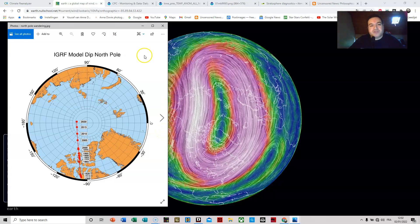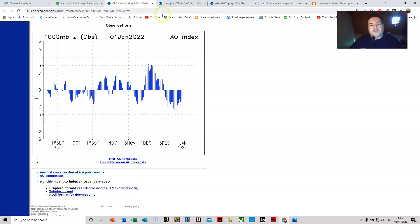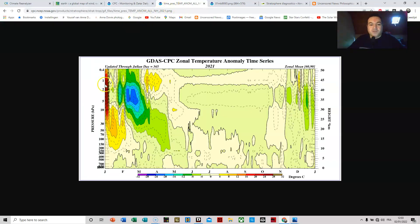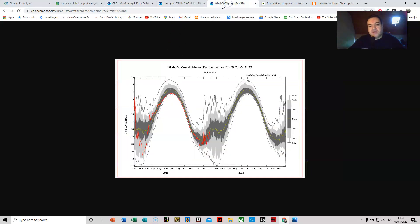So we do have a negative Arctic Oscillation at the moment. I'm not sure whether this will last or become positive again. You will see in the coming days. Luckily we don't have a sudden stratospheric warming like last year. This would have been catastrophic in a negative Arctic Oscillation because then it would intensify these incursions of cold air. So for now we are safe.